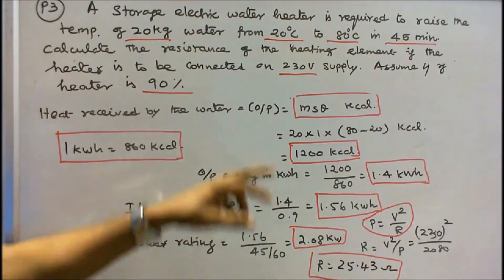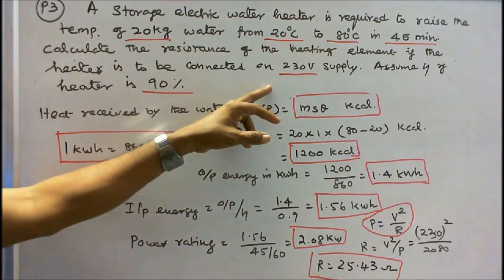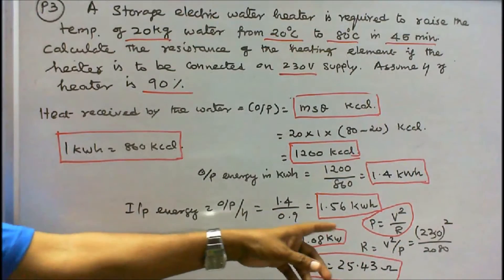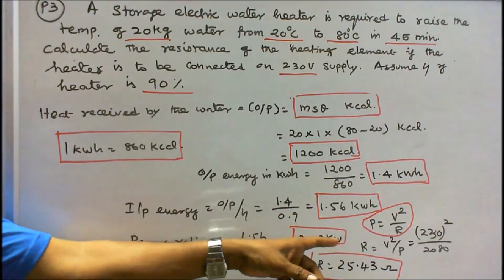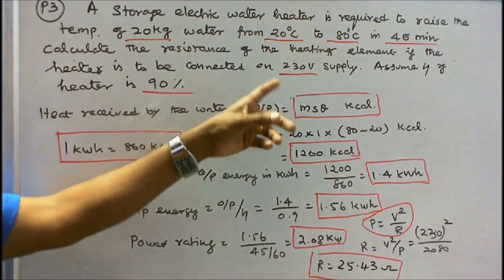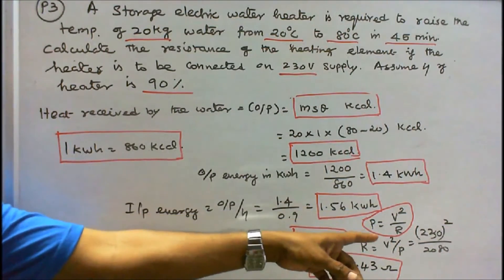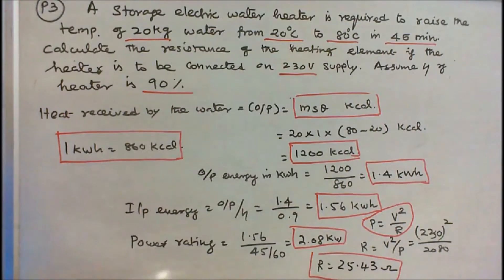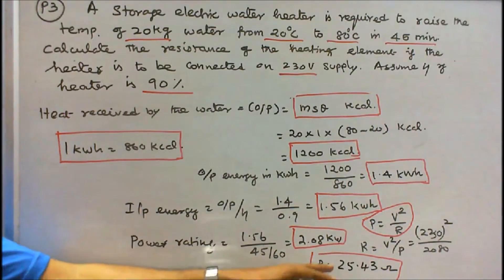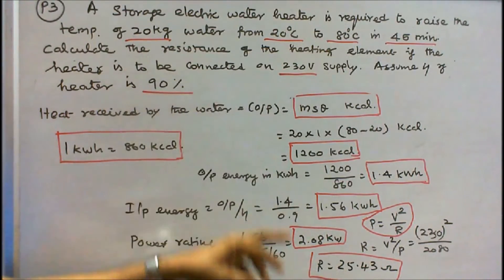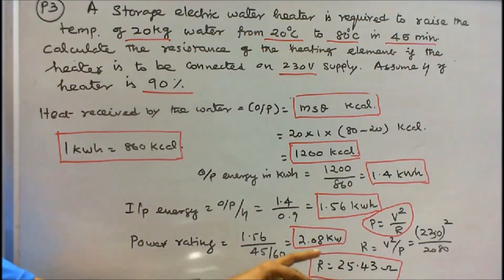With power rating known and voltage = 230 V, resistance R = V² / P = 230² divided by 2080 = 25.43 ohms. The resistance of the heating element is 25.43 ohms.